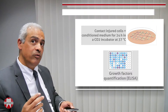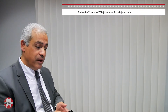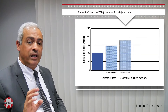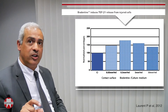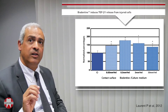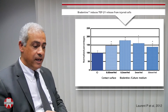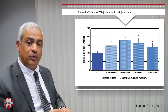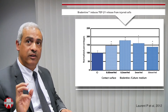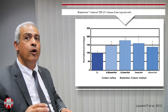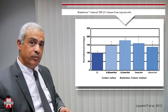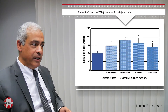We then measured TGF-β1, an important growth factor, and whatever the surface of the material used, we noticed a significant increase of TGF-β1. This is important because this factor is involved in the differentiation of odontoblasts, rendering these cells able to produce reparative dentin.